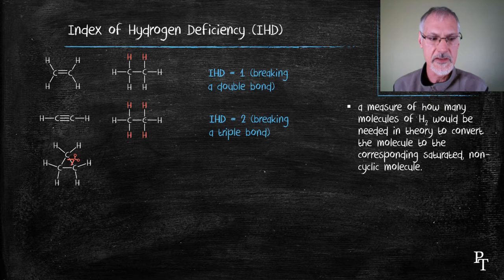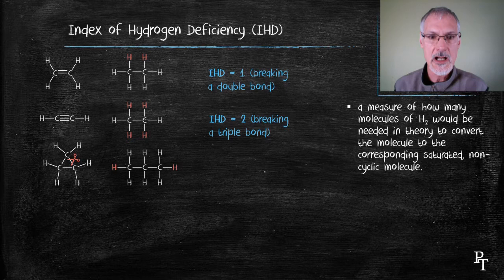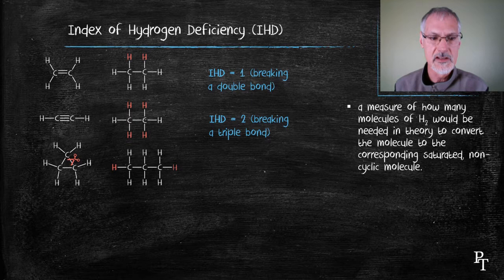Here I start with a ring structure, cyclopropane in this case. If I cut it at the place I've indicated, each of those carbons would require a hydrogen, or in total, two hydrogens to saturate the molecule, hence its IHD is also one.